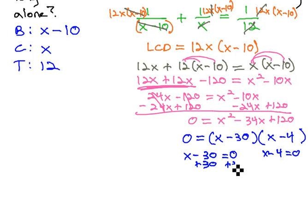We'll add 30 to both sides, x is equal to 30. Add 4 to both sides, x is equal to 4.